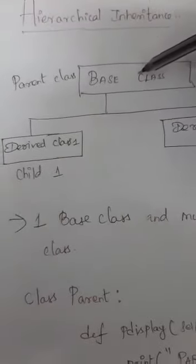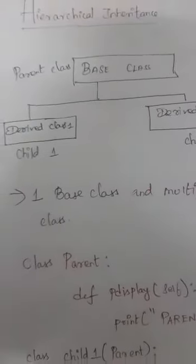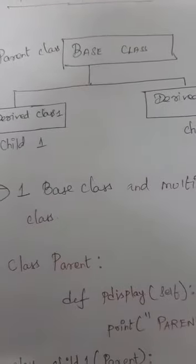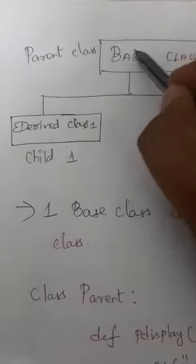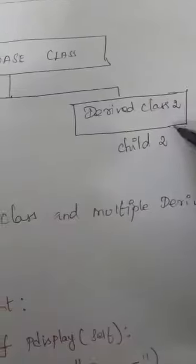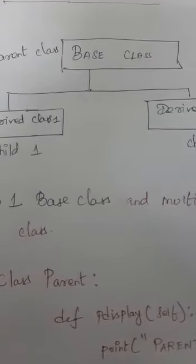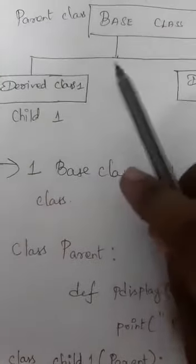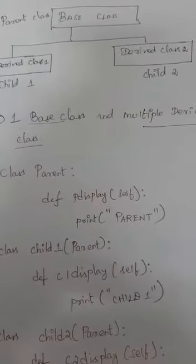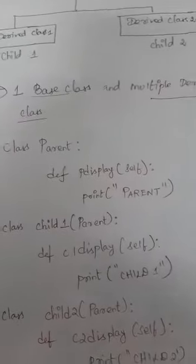Hierarchical inheritance means you have only one parent class and you can have multiple derived classes. In this example you have one base class and two derived classes — child one and child two. Derived class one is called child one, derived class two is called child two. The definition: one base class and multiple derived classes is called hierarchical inheritance.